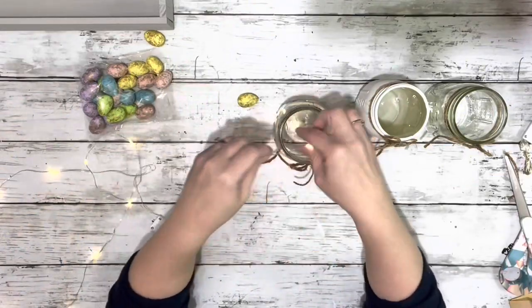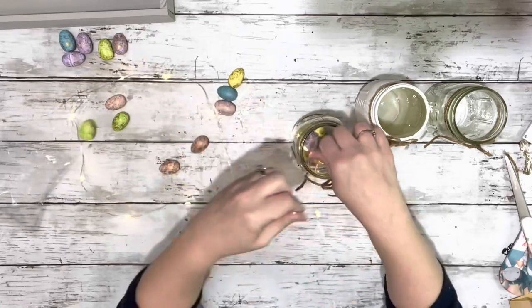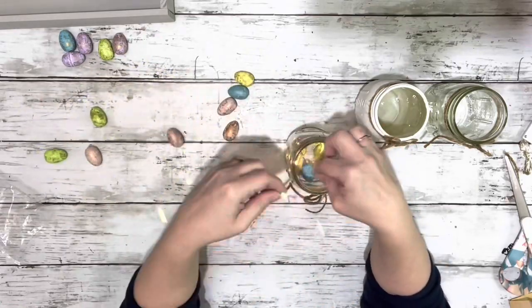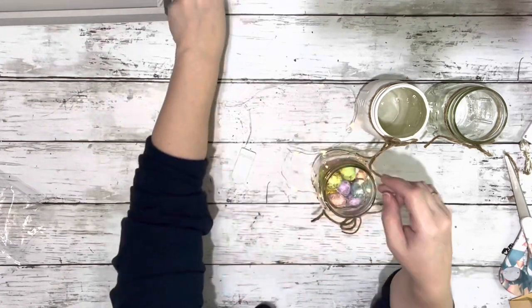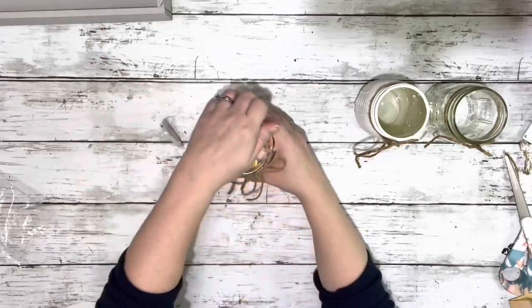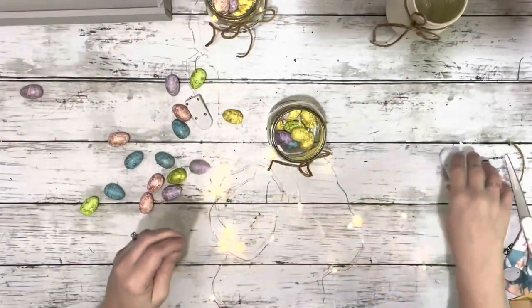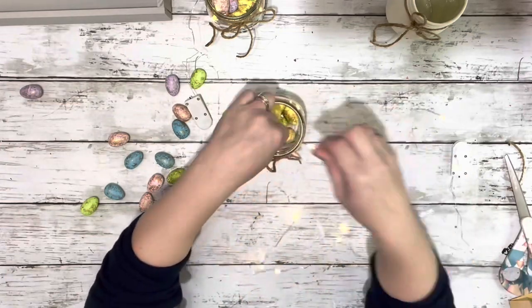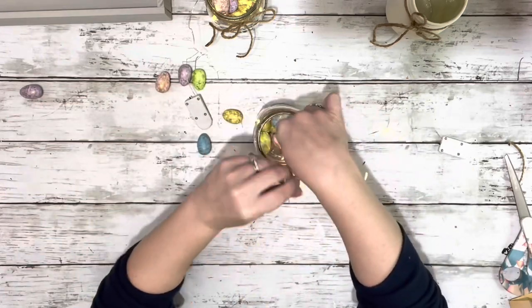Next I took the fairy lights and put one set partially in one of the clear jars, and then filled it in with some eggs, more fairy lights, and the eggs. And I just kept going, alternating, putting more of the fairy lights in so that it would be throughout the eggs. So I did that on the two clear ones. You can definitely use the Dollar Tree eggs or their lights for this. I just had these on hand.